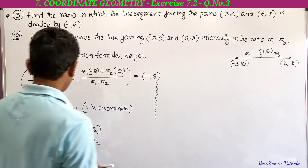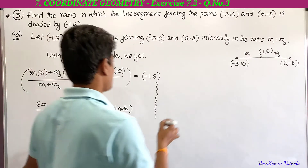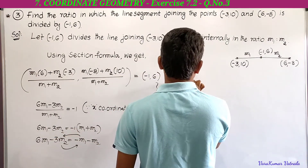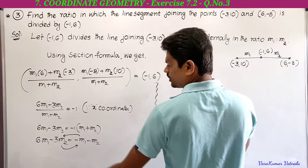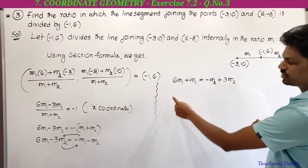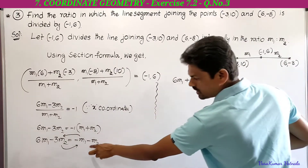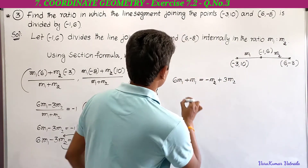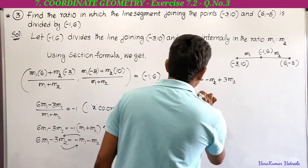Simplify: take -m1 to the left side and -3m2 to the right side. Already 6m1 is there; -m1 becomes +m1 on the left. On the right, -m2 is there; -3m2 becomes +3m2. So 6m1 + m1 = -m2 + 3m2, which gives 7m1 = 2m2.